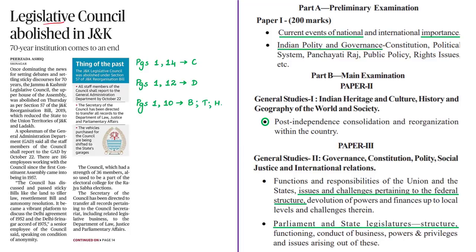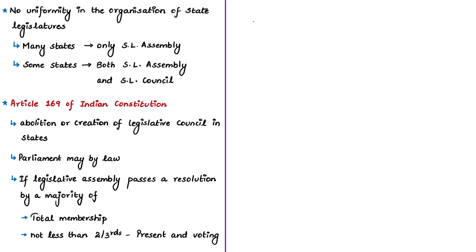This news article is about the abolition of the legislative council in Jammu and Kashmir. In our country, we do not have a uniform organizational structure at the level of state legislatures. Most states have only the state legislative assembly, whereas some states have both a legislative assembly and a legislative council. In parliamentary parlance, the legislative council is also called the upper house in states, the house of elders, and the second chamber.